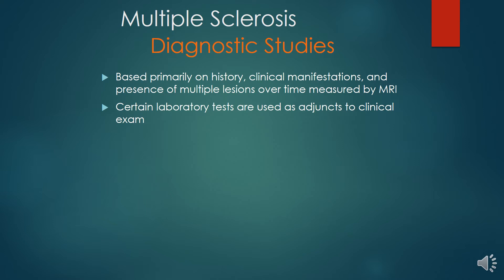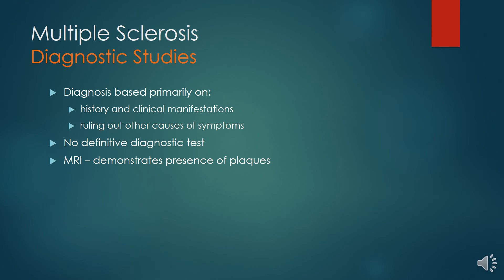Diagnosis is based primarily on history, clinical examination and presence of multiple lesions measured by MRI. Certain laboratory tests are used as adjuncts for the clinical exam. MRI may show multiple asymmetric, often paraventricular white matter lesions, Dawson's fingers especially in the corpus callosum, and active lesions enhanced with gadolinium. CSF reveals mononuclear pleocytosis with increased IgG or at least two oligoclonal bands. Abnormal somatosensory or visually evoked potentials may also be present. There are no definitive diagnostic tests and MRI demonstrates presence of plaques.